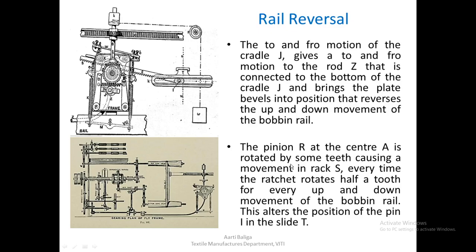Because of that rotation, there is a movement in rack S every time the ratchet rotates. This alters the position of pin I in slide T. As rack S gets movement due to engagement with pinion R on center A, pin I moves in slide T, which is attached to the bobbin rail.